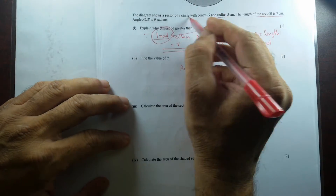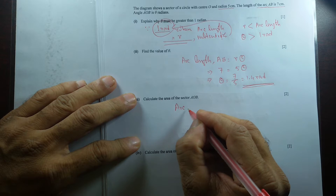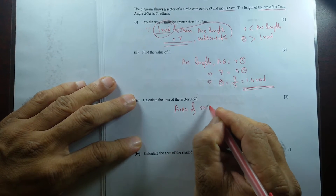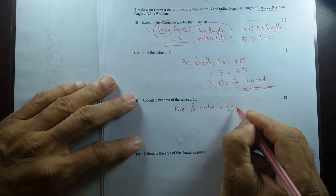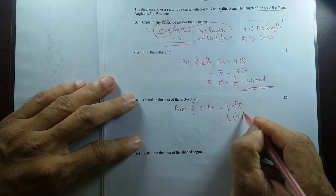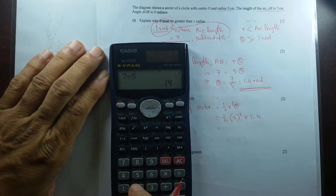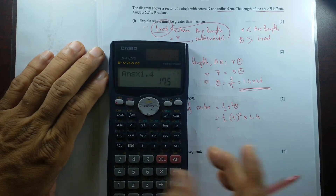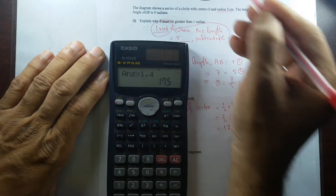Now calculate the area of the sector AOB. The formula for area of a sector is half R squared times theta. With R = 5 and theta = 1.4, that gives us (25/2) × 1.4 = 17.5 square centimeters.